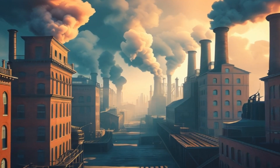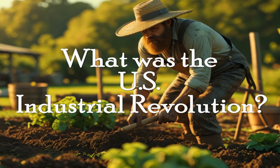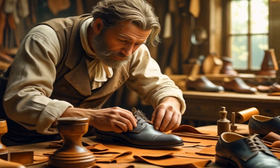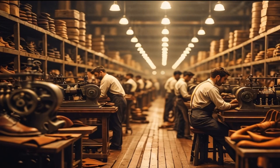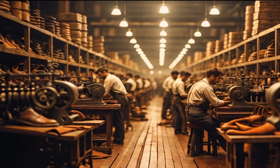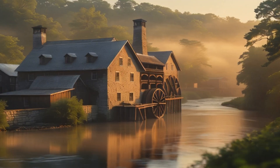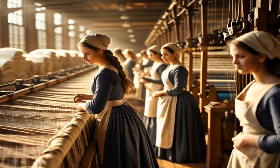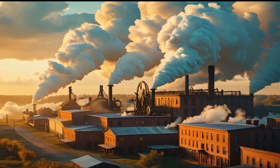This transformative event is known as the U.S. Industrial Revolution. The Industrial Revolution was a time period in which the United States shifted from an agrarian, handcraft-based economy to one that was dominated by mechanized factories and mass production. Historians recognize two distinct phases of U.S. industrialization. The first started in 1793, gained rapid momentum in the 1820s, and lasted until 1870.